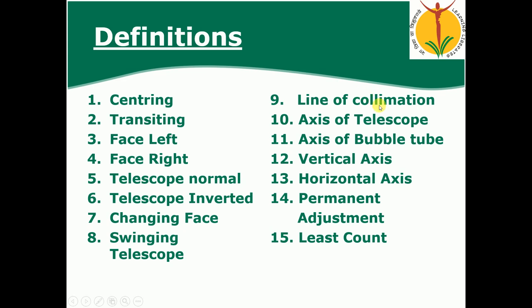Now we are going to see what is the line of collimation. The line of collimation is an imaginary line passing from the intersection of the cross-section of the diaphragm, the optical center of the object glass, and its continuation. That line is called the line of collimation.